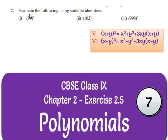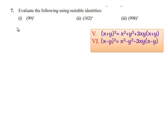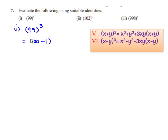Coming to the seventh problem, evaluate the following using suitable identities. The first one given to us is 99 whole cube. So 99 can be written as 100 minus 1, so 99 whole cube becomes 100 minus 1 whole cube.